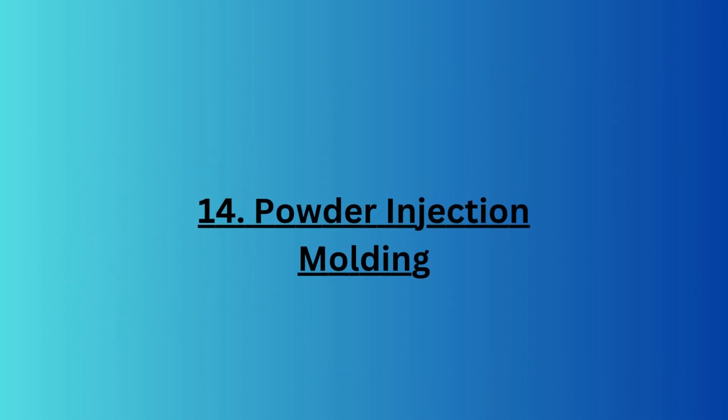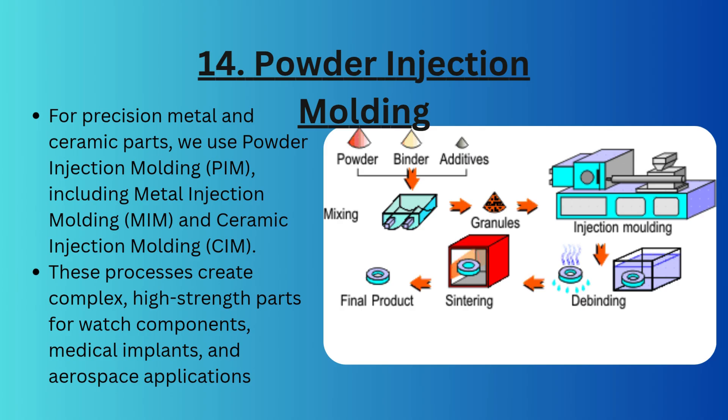The last type is Powder Injection Molding (PIM). For precision metal and ceramic parts, we use powder injection molding, including metal injection molding and ceramic injection molding. This process creates complex, high-strength parts for watch components, medical implants, and aerospace applications.